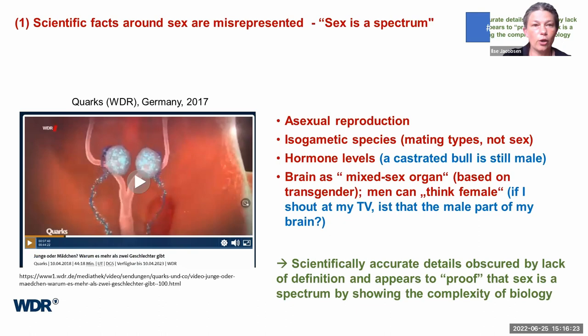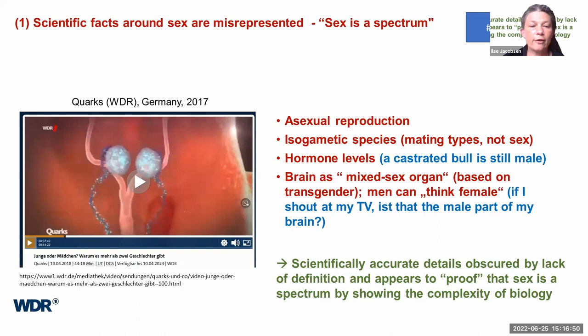So overall, in this show, what is done is they provide a lot of scientifically accurate details which are fascinating to watch. But by lacking a clear definition of what they mean with Geschlecht or sex, and by basically just throwing bits of complexity at the audience, they are more confusing than clarifying anything. And because there is a lack of clarity, they imply — without demonstrating — that sex is not binary. So it's confusion rather than factual education.